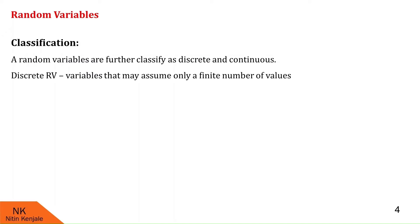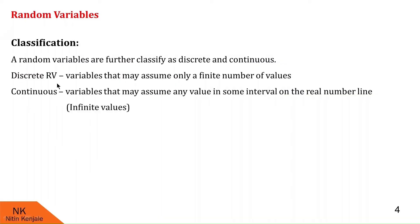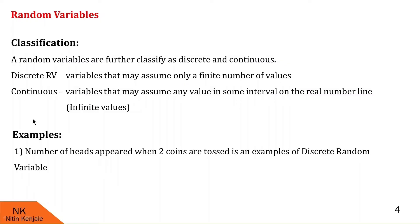A discrete random variable is a variable that may assume only a finite number of values or distinct values. For example, the number of heads that appear when two coins are tossed is an example of a discrete random variable, because the random variable will take values 0, 1, or 2.